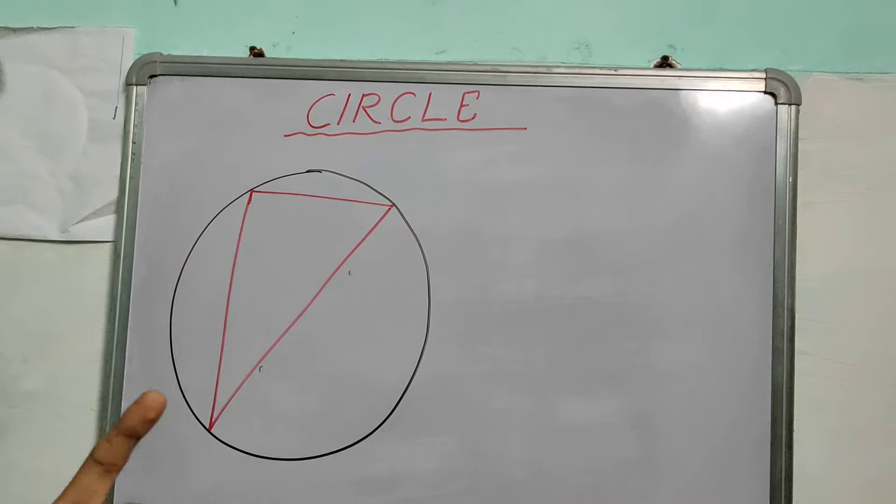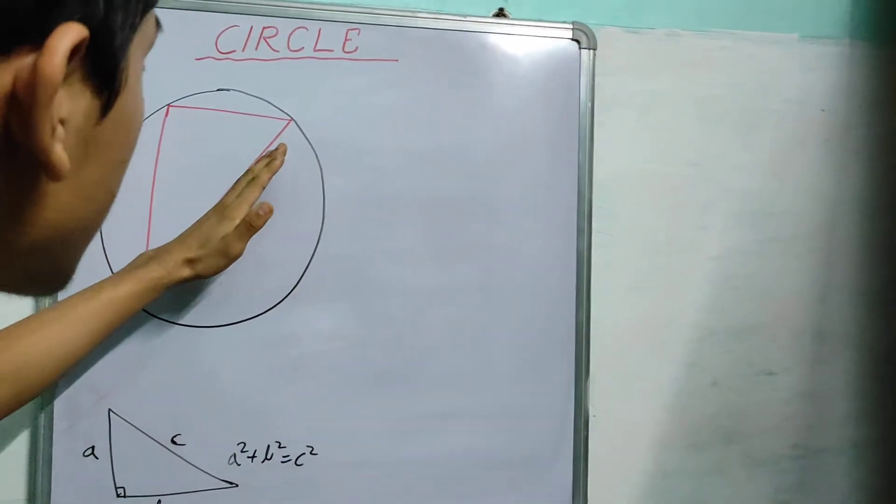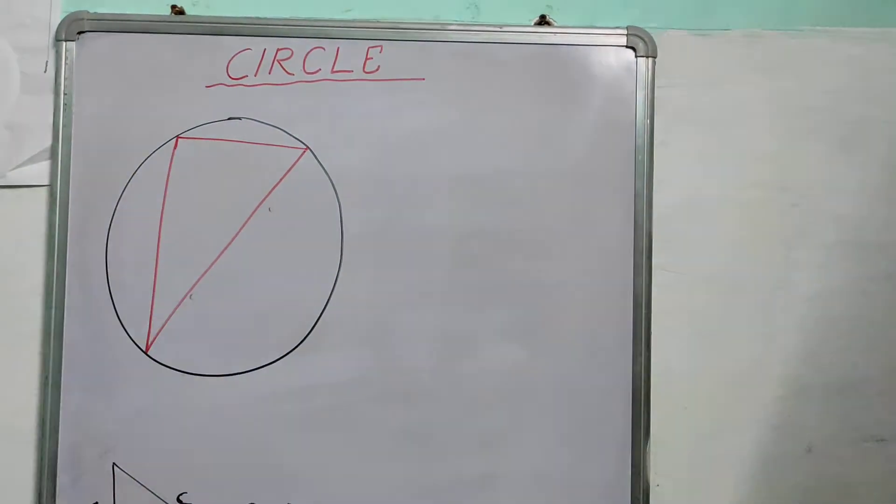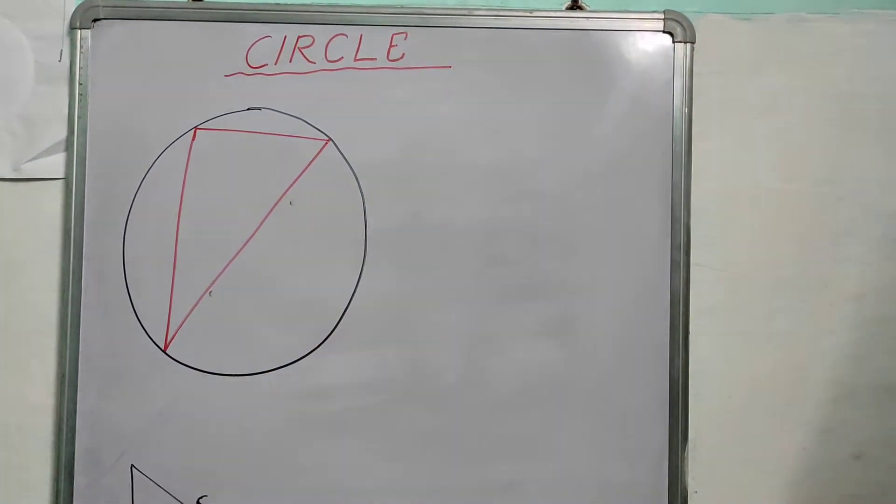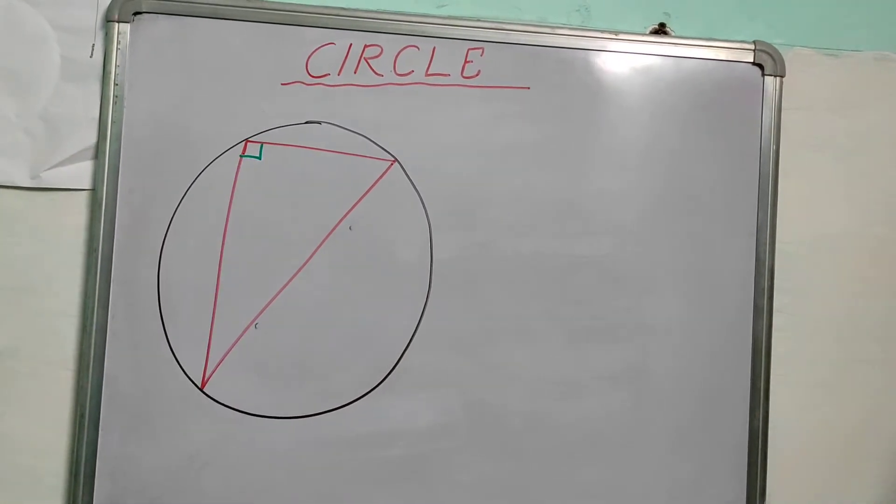Now, the important thing here is that if this is the diameter, then this angle will be 90 degrees. So you can mark this as a right angle.